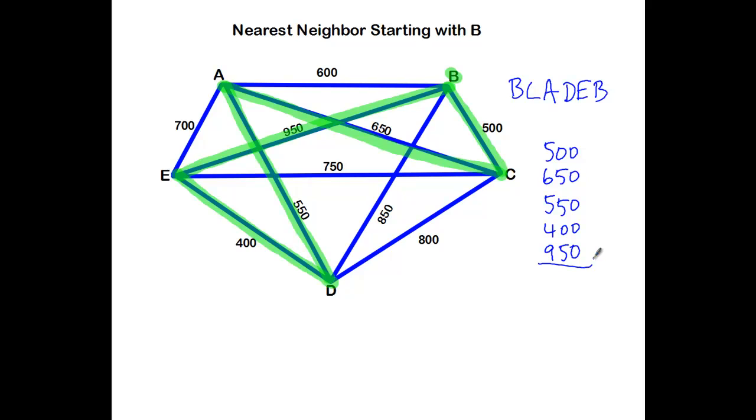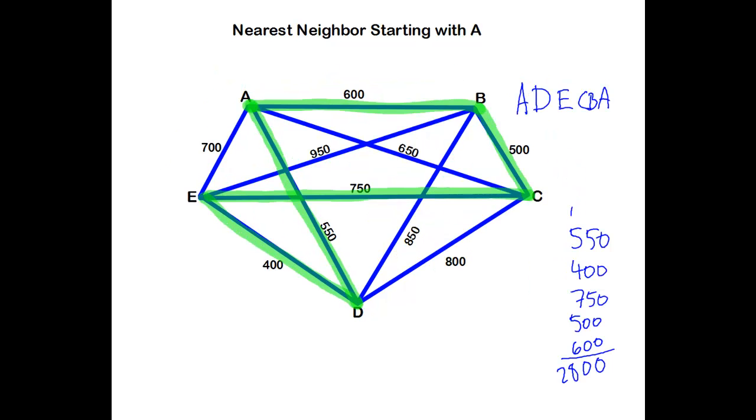So when I add all these together, I get 0, 15. There's 12, 17, 21, 3050. All right, so from B, I end up with an algorithm answer that gives me 3,050 miles, whereas if I started at A, I ended up with 2,800.